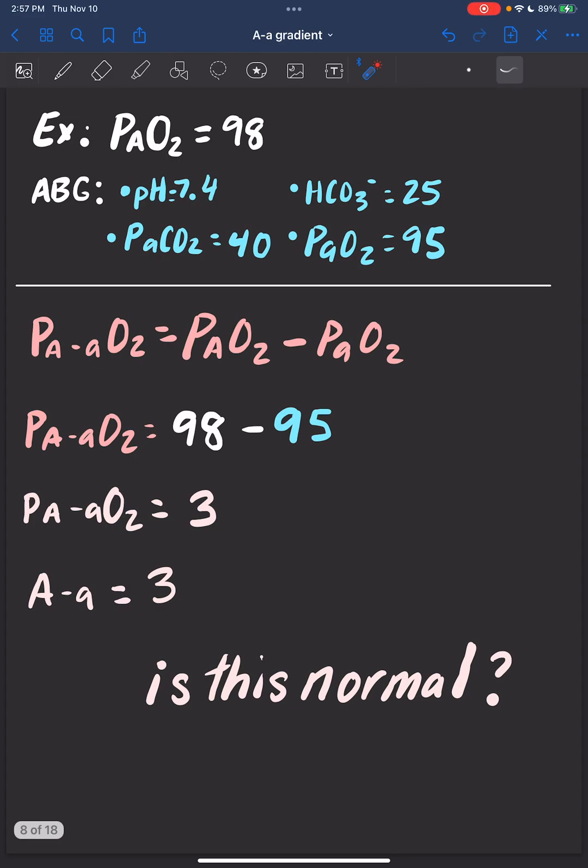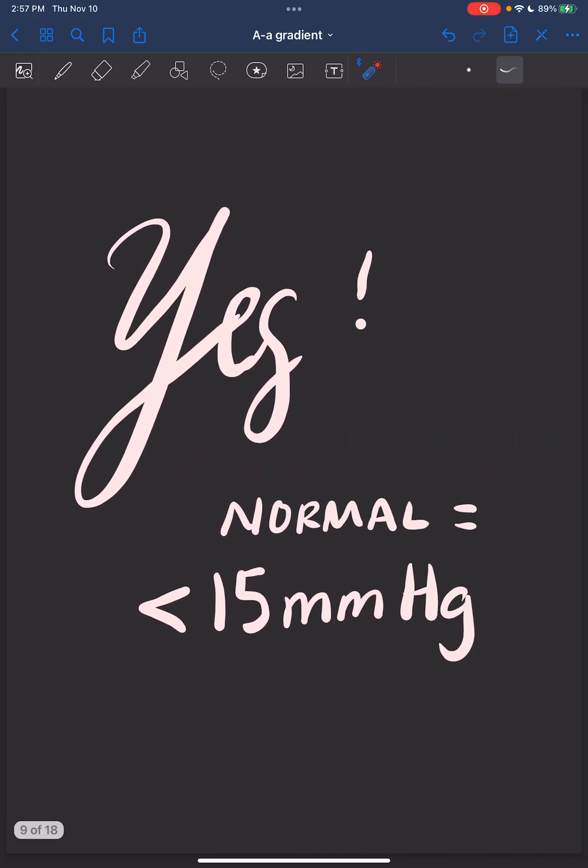Let's practice. So our alveolar oxygen is 98. We did an ABG and we figured out that the arterial oxygen is 95. So 98 minus 95 is 3. Our A-a gradient is 3. Is this normal? Yes, remember, a normal A-a gradient is less than 15 millimeters of mercury.